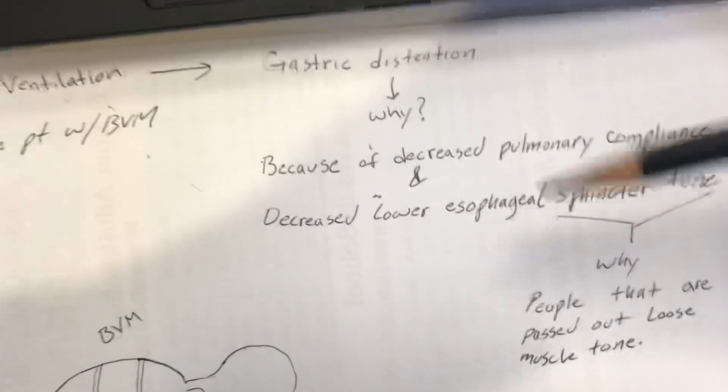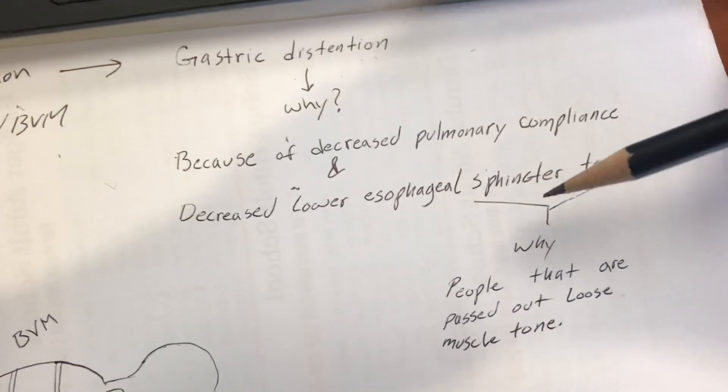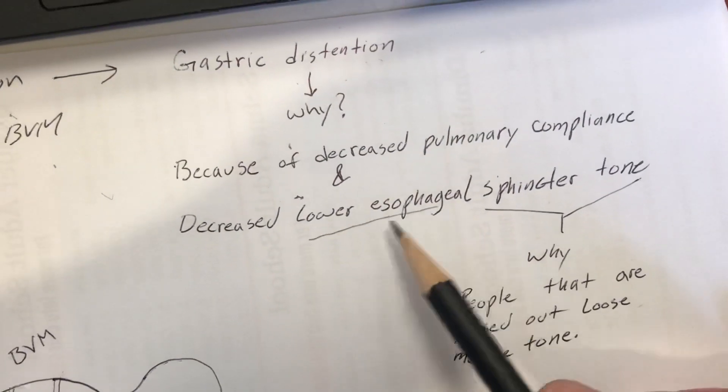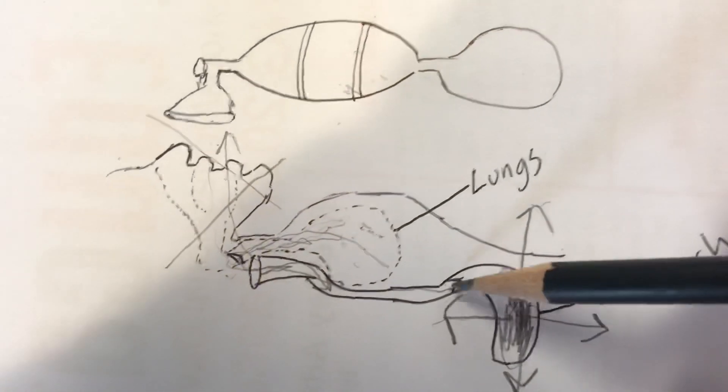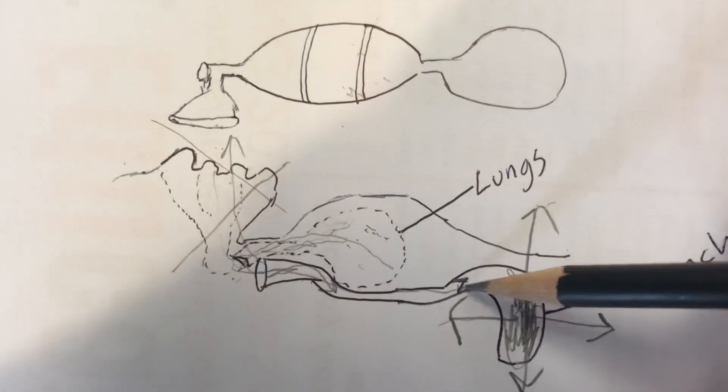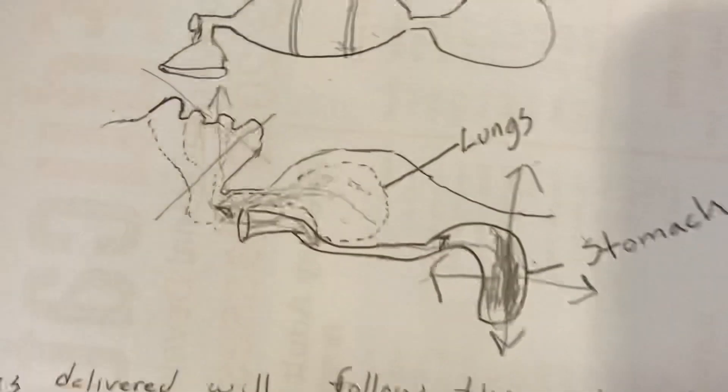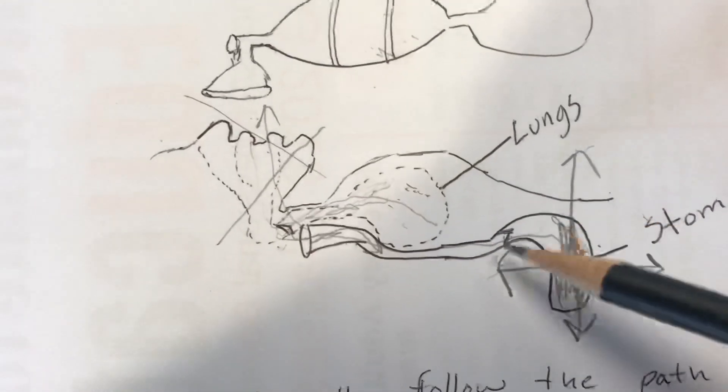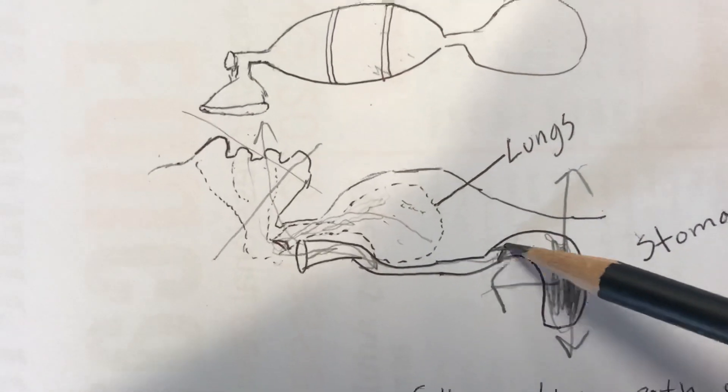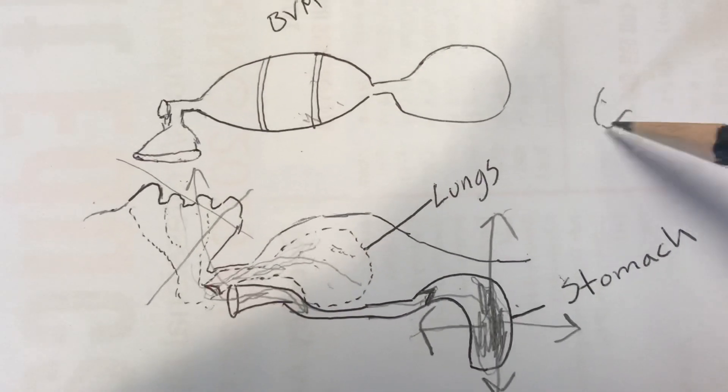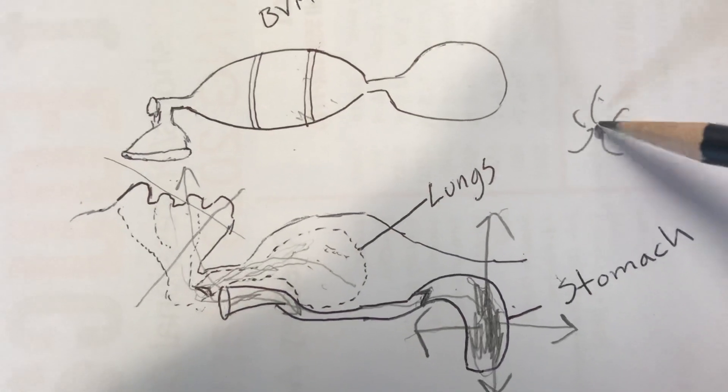Another one is decreased lower esophageal sphincter tone. So what is this? The lower esophageal sphincter is like a little gate, a little door right here at the bottom of the GI tract, at the bottom of the esophagus. You have a little sphincter - think of it like a little thing that opens up.